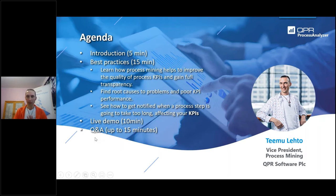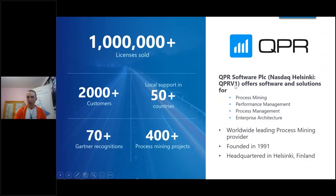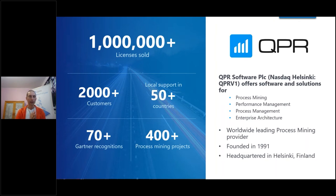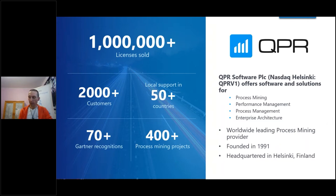We have reserved time, so just please write to the chat box. QPR — just a couple of words. As you see, more than 1 million licenses sold to more than 2,000 customers, which means a lot of process-related KPIs and a lot of experience with different kinds of KPIs. We were founded in 1991, so we've been in this business for nearly 30 years, and process mining has been part of that for 10 years.